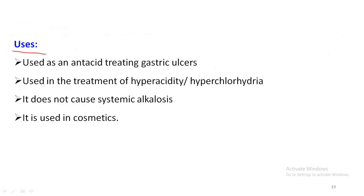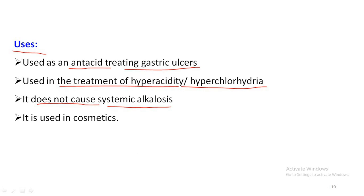The uses of aluminum hydroxide gel or suspension: it is used as an antacid for the treatment of gastric ulcers and in the treatment of hyperacidity or hyperchloridria. Being water insoluble and non-absorbable, it does not produce systemic alkalosis. It is also used in cosmetic preparations.